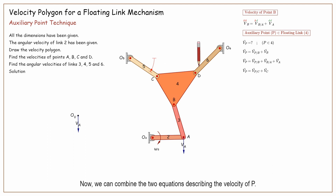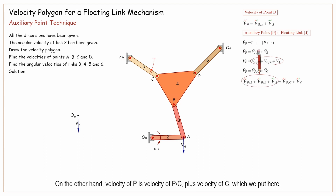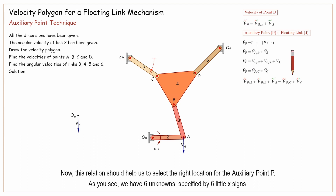Now we can combine the two equations describing the velocity of P. From one hand, velocity of P is velocity of P with respect to B, plus velocity of B with respect to A, plus velocity of A. On the other hand, velocity of P is velocity of P with respect to C, plus velocity of C. Now, this relation should help us to select the right location for the auxiliary point P. As you see, we have six unknowns, specified by six little x signs.